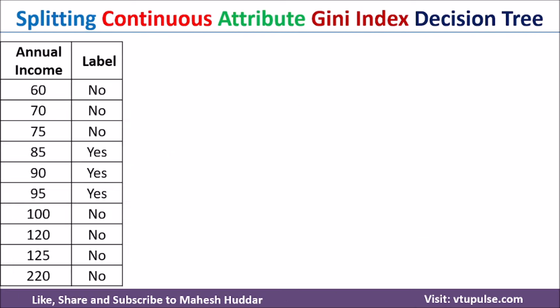In this case, we have been given a dataset with annual income as the continuous valued attribute. The label has two possibilities: the first one is 'no' and the second one is 'yes.' What we need to do is find the Gini index of this annual income and then select the best split point.